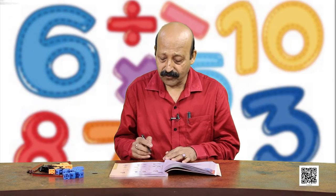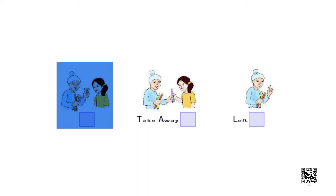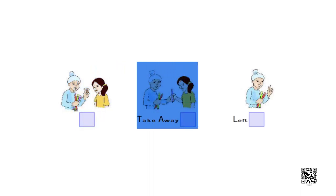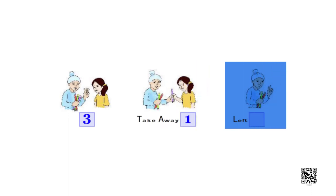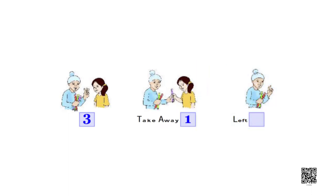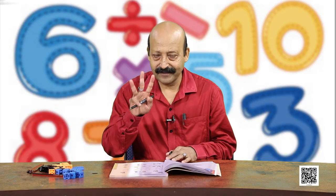There are 1, 2, 3 pencils with the boy, and he has given 1 pencil to a girl. So 3 pencils are here and 1 pencil has been taken away - how many are left? I think you can see 1 and 2, so only 2 are left. This boy is showing 3 by his fingers, 1 has been given, so how many are left? 2.